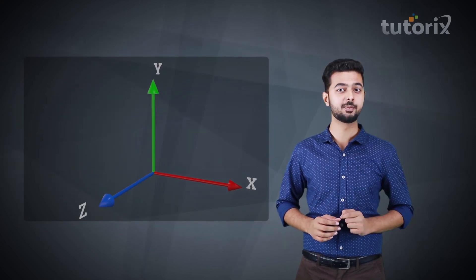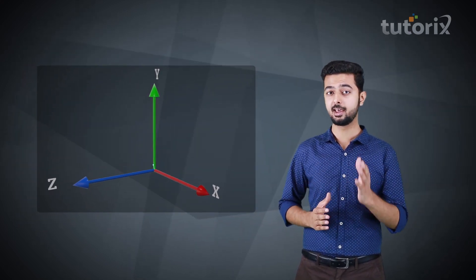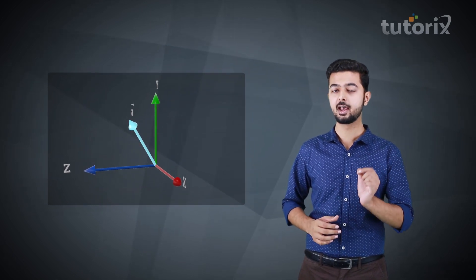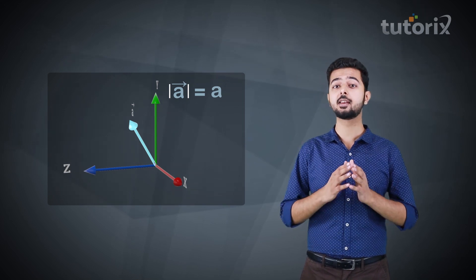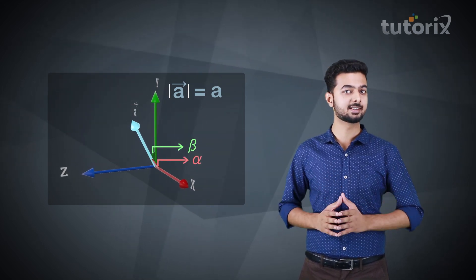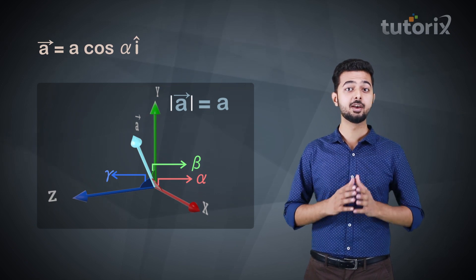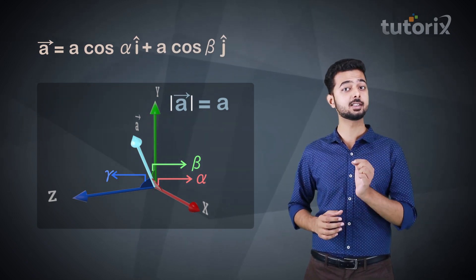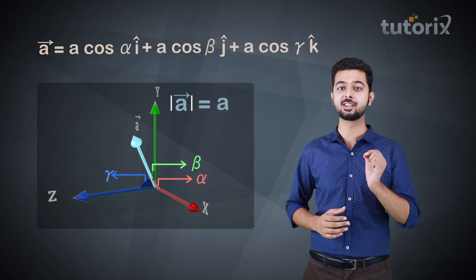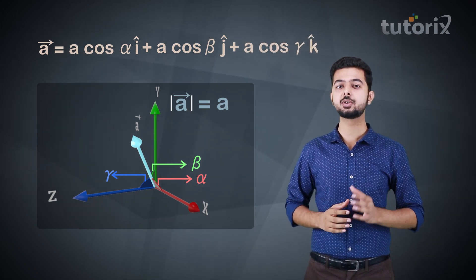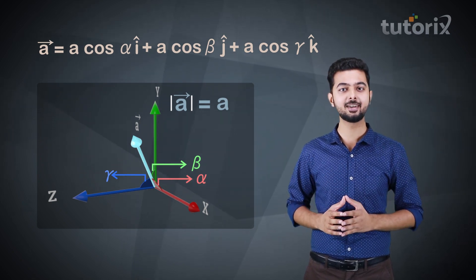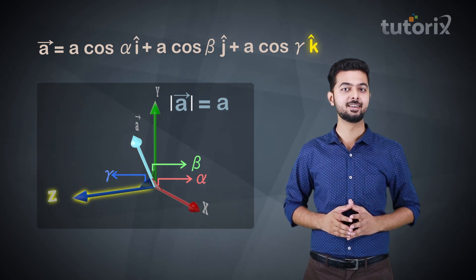We will now extend this concept from a two-axis system to a three-axis x, y, z coordinate system. Suppose we have a vector A with magnitude 'a', making angle alpha with the x-axis, beta with the y-axis, and gamma with the z-axis. The x-component will be A cos α î, the y-component will be A cos β ĵ, and the z-component will be A cos γ k̂. Just as we use î for the x-component and ĵ for the y-component, we use k̂ for the z-component.